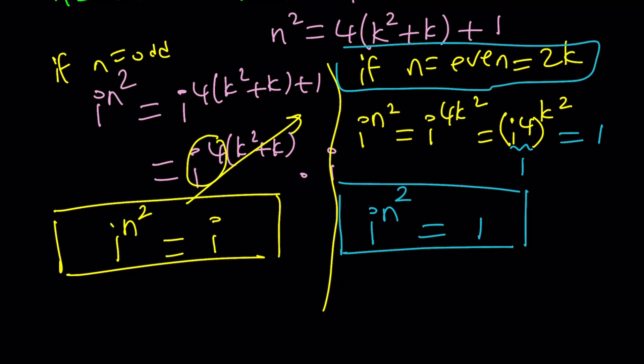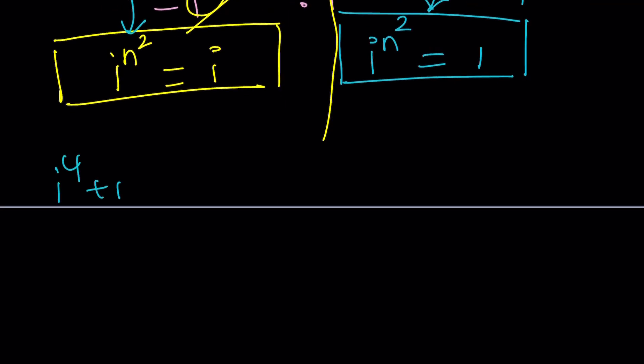So if n is even, we're going to get 1. If n is odd, we're going to get i. So now let's take a look at this sum one more time. i to the fourth plus i to the ninth plus i to the 16th. Let's write a couple more terms to get a better idea.